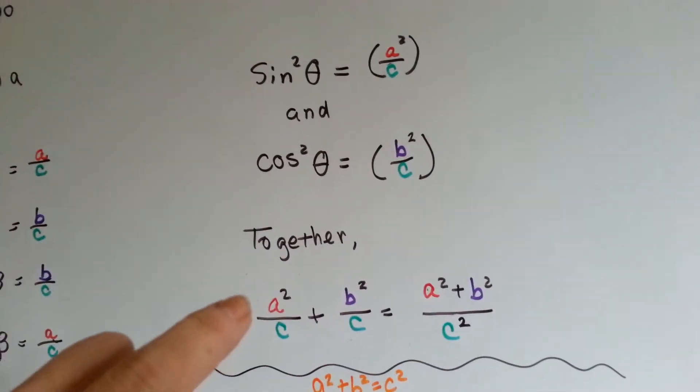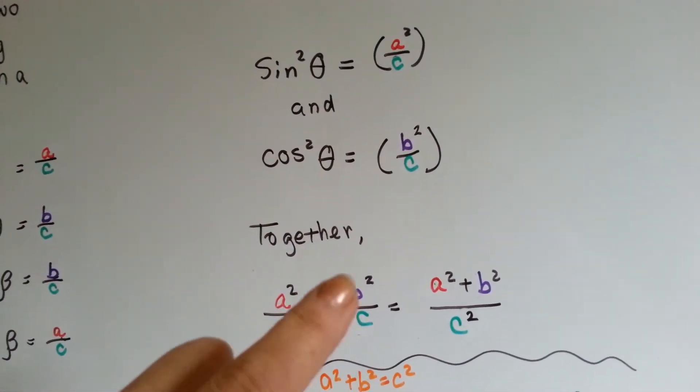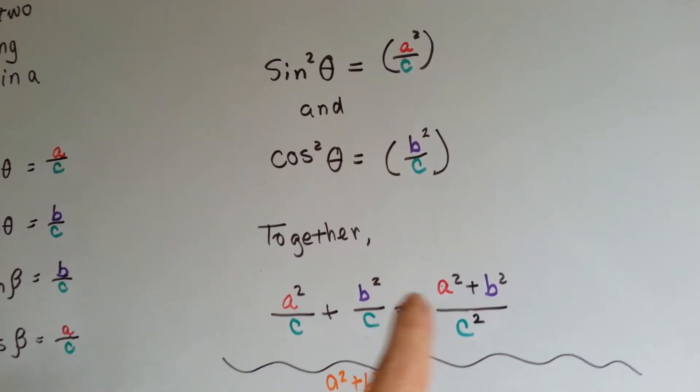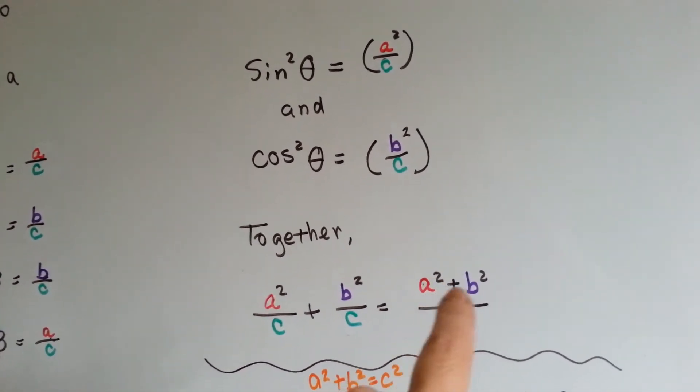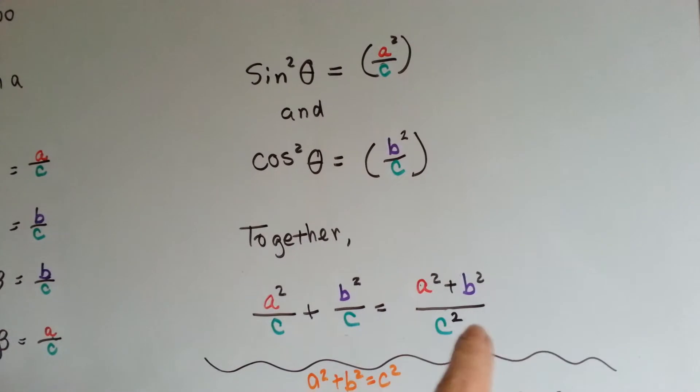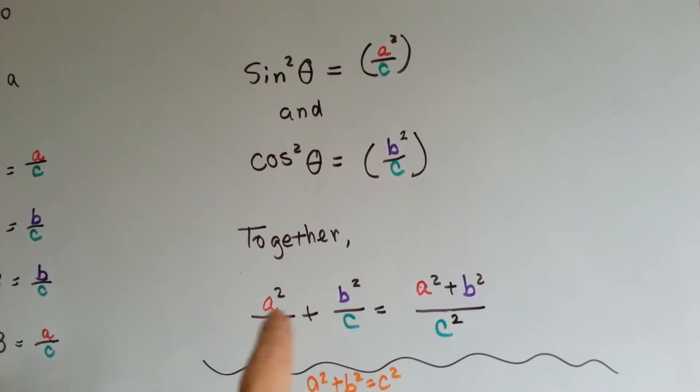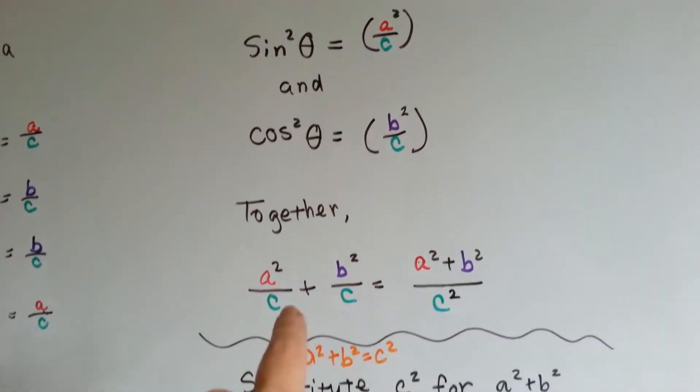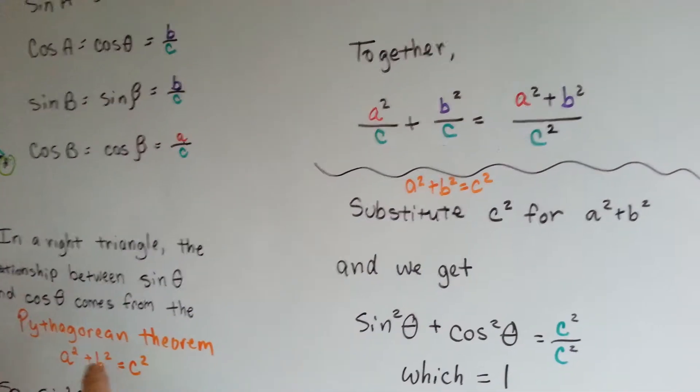Together, you've got A squared over C plus B squared over C, which is saying the same thing as A squared plus B squared over C squared. That makes sense, right?